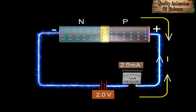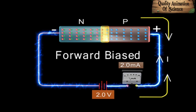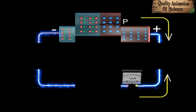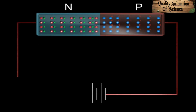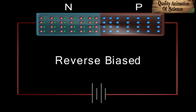In this type of connection, the P-N junction is said to be forward biased. If the P-side of a P-N junction is connected to the negative terminal of the battery and the N-side is connected to its positive terminal, the P-N junction is said to be reverse biased.